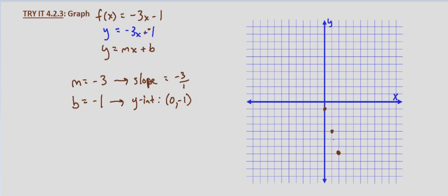And then we simply, as we have in the past, connect the dots. So we're looking at a line that goes through these three points. And there is the graph of f(x) = -3x - 1.